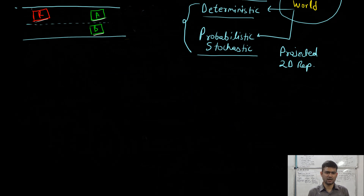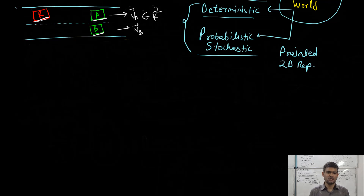Assume that we have a robot R and there are two obstacles, obstacle A and obstacle B, around it. The goal of the robot is to compute the velocities VA and VB of these two obstacles, where VA and VB are two-dimensional real vectors with X and Y velocity components. Assume we have a sufficiently capable algorithm, denoted by lambda, which takes the entire sensory data as input and outputs the two velocities VA and VB.